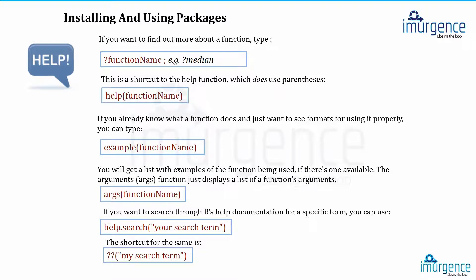If you want to get into the documentation of R, you can use 'help.search' and type the parameter you want to search. There is also a shortcut: a double question mark followed by 'median'. The difference between a single and double question mark is that a single question mark checks only the headers of the help file, while a double question mark searches through the full documentation text.